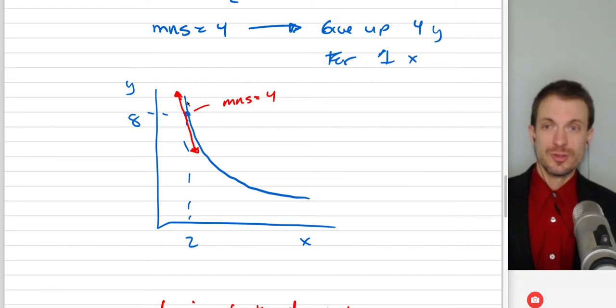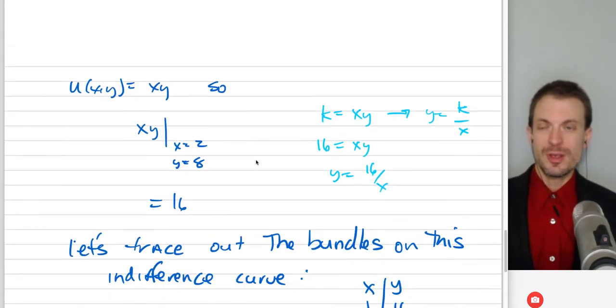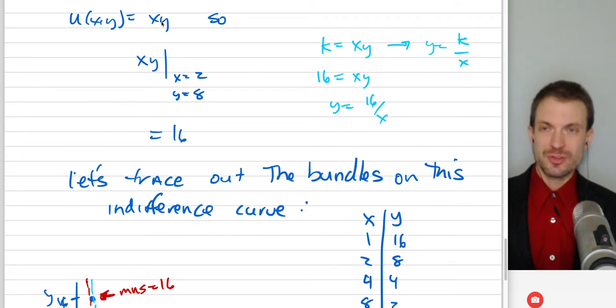It's going to have a slope of 4. So it's telling us at this point instantaneously, the infinitesimal change that Bob would be willing to make is to give up 4 units of Y for 1 unit of X. Now, let's take a look deeper here. Let's look a lot deeper. Here was the utility function, XY, and we were evaluating it at this particular bundle. So 2 times 8 was a utility level of 16.